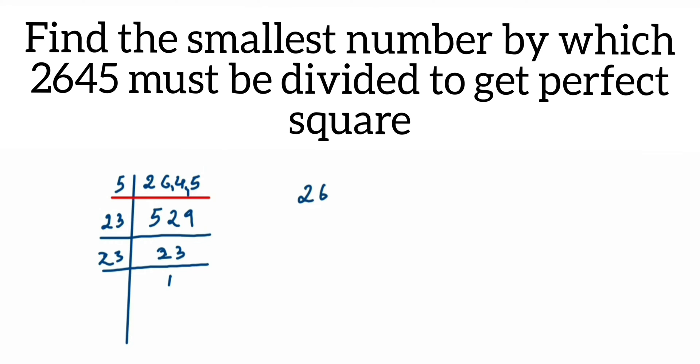Let me rewrite what I got from the prime factorization. Here 2645 can be written as 5 × 23 × 23. You can see here that we got a pair of 23, but 5 is a single factor here, it doesn't have any pair.